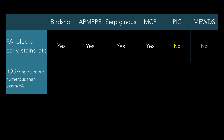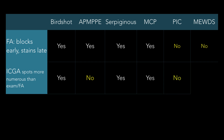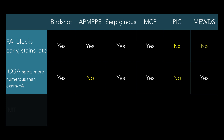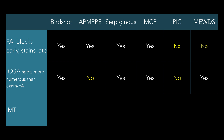The ICG one is so hard for me to remember. ICG is not more numerous than FA on AMPPE and PIC — and that's it. IMT — we've talked about throughout. Birdshot, yes or no? Yes. AMPPE, yes or no? No. Serpiginous, yes or no? Yes. MCP, yes or no? Yes. PIC? No — no is the answer. And MUDES? No. Good. Now you guys know more about uveitis than I do if you can remember what I just told you.